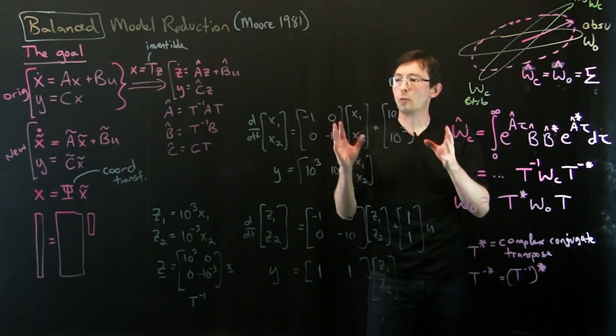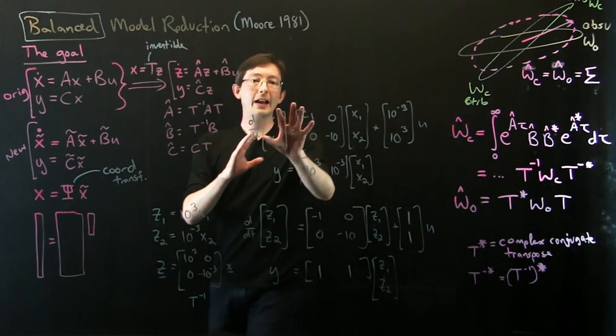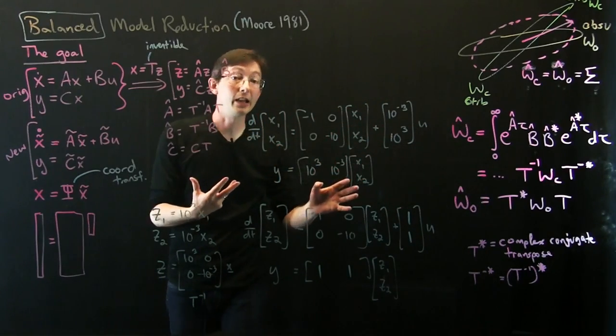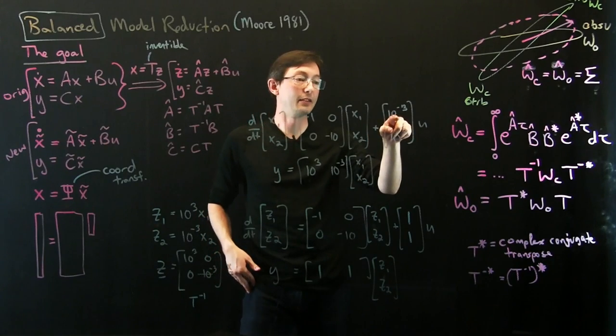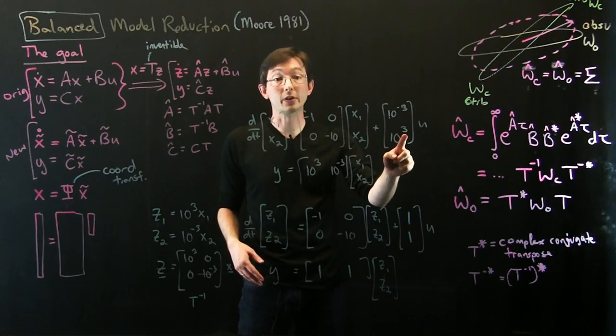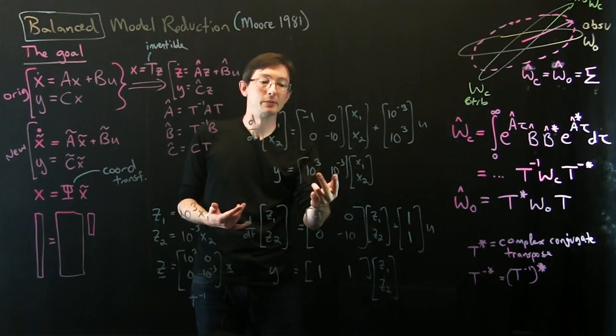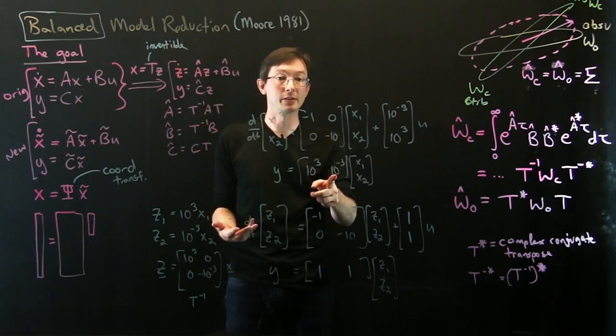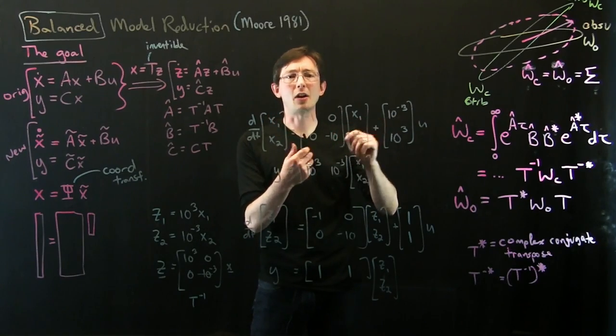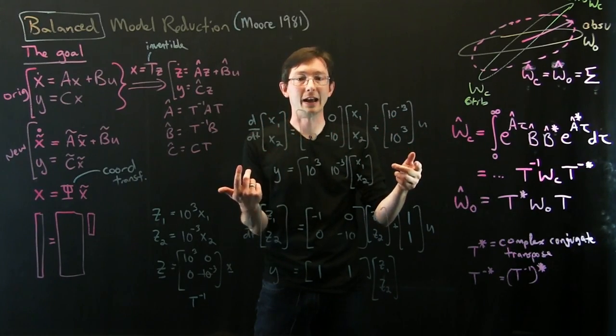Long story short, what we're finding is even if I had dynamics that looked terribly unbalanced, this is as bad as it can get. This mode was ultra controllable and this mode was barely controllable, and the opposite was true. This was very, very observable and this was barely observable. This was just an artifact of how I chose to write x.